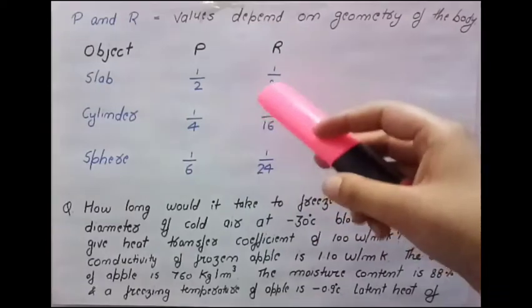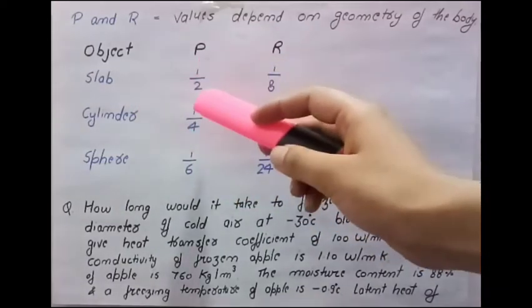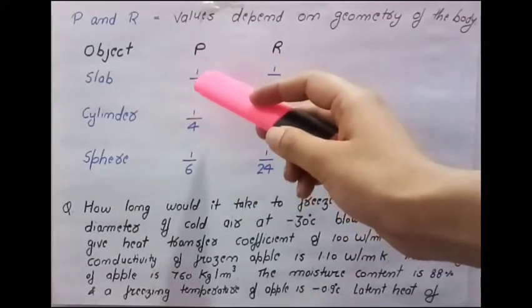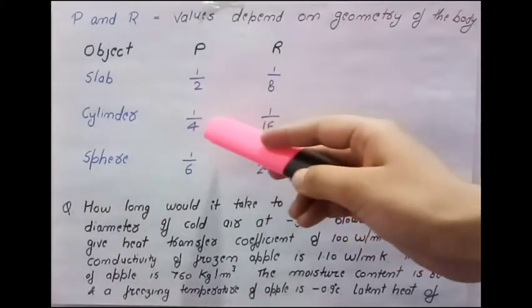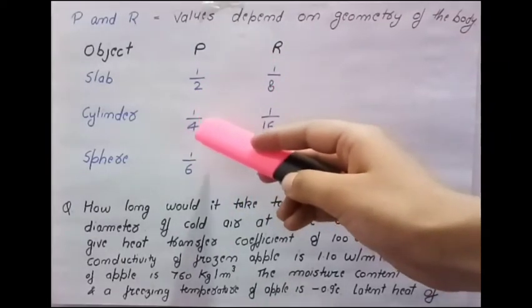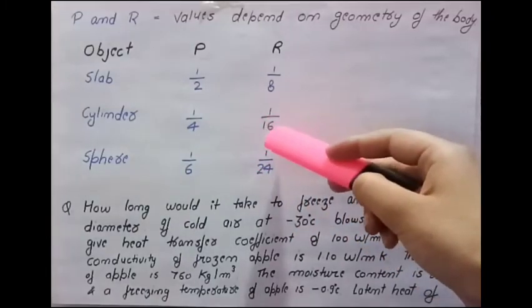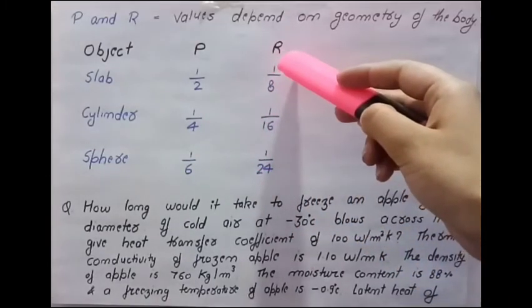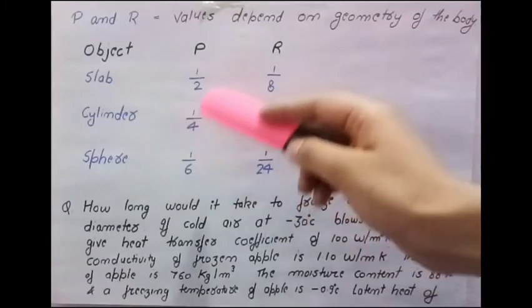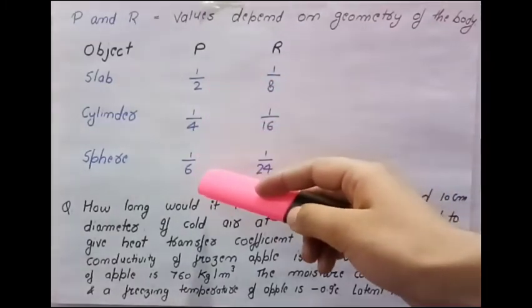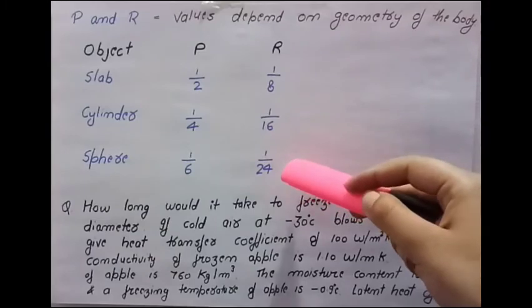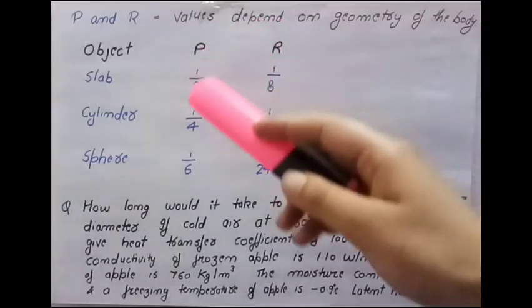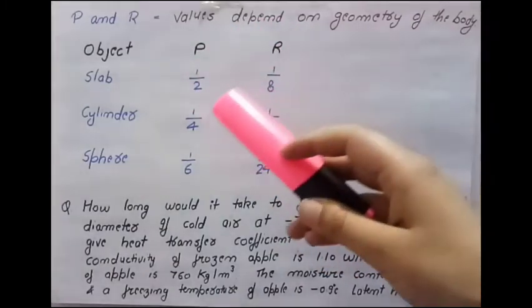How to remember this? For slab P is 1/2, multiply the denominator by 4 you get 1/8. Same for cylinder: 1/4 multiply by 4 you will get 16, so 1/16 is R value for cylinder. For sphere P is 1/6 and R is 1/24. So based on the equation of Planck, let us discuss some numerical.